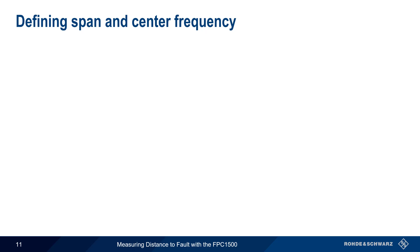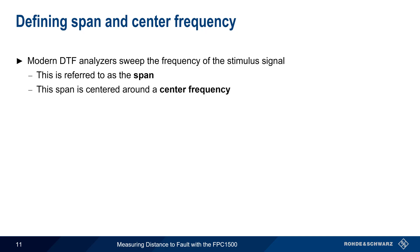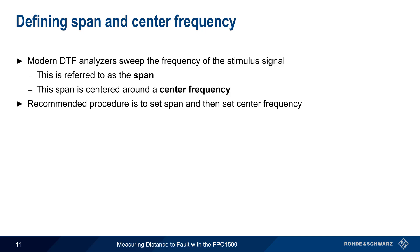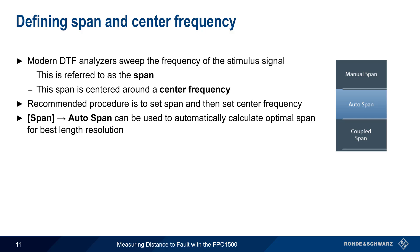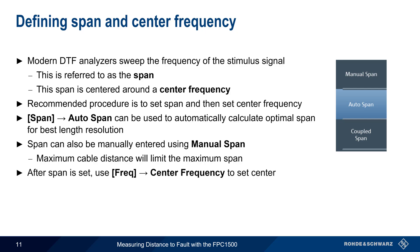The next configuration step is defining span and center frequency. Most modern DTF analyzers use a method called frequency domain reflectometry, which sweeps the input or stimulus signal over a frequency range. This range is referred to as the span, and this span is centered around a center frequency. Unlike using a spectrum analyzer, the recommended procedure in DTF is to first set the span, and then set the center frequency. On the FPC-1500, pressing the Span hard key and then selecting Auto Span will cause the instrument to automatically calculate the optimal span for obtaining the best length resolution. Span can also be manually set using Manual Span, although keep in mind that the maximum cable distance entered will limit the maximum configurable span. Once the span has been set, press the Frequency hard key and use Center Frequency to set the center of the span.